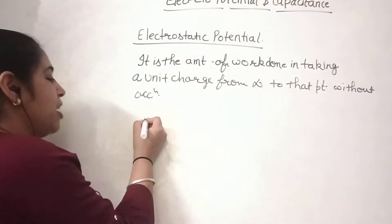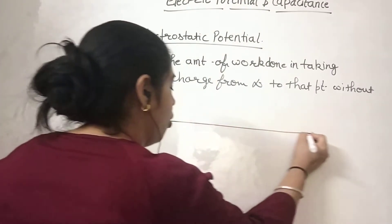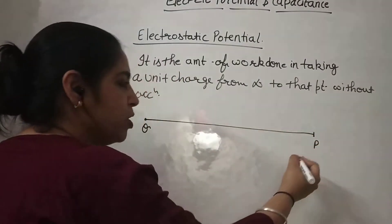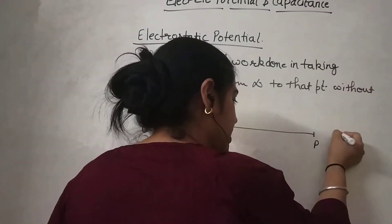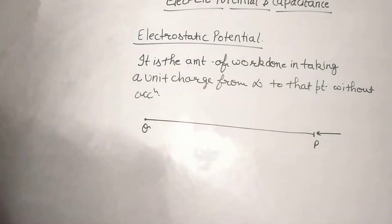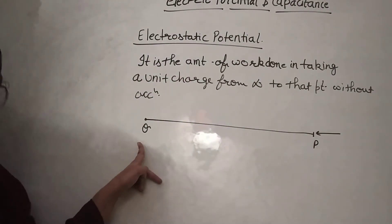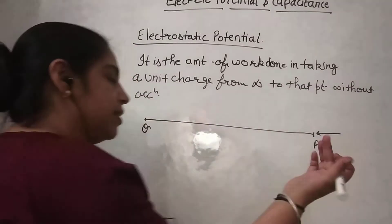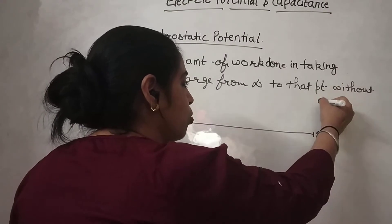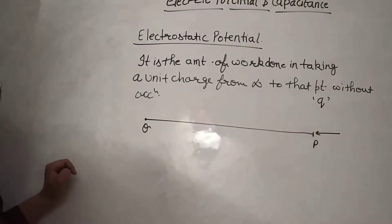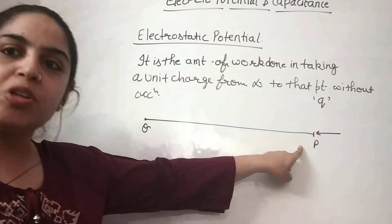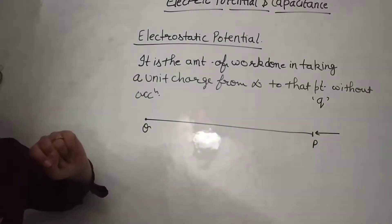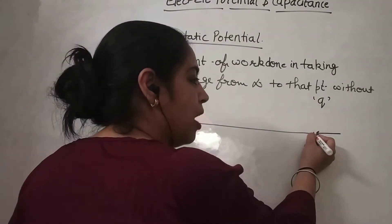Let's consider we have placed a charge q here. And I want to bring another charge to point P. I am bringing a unit positive charge q from infinity. At any time t your charge is at point P — distance r from q. The force acting on the incoming charge is outwards, because both charges are positive.